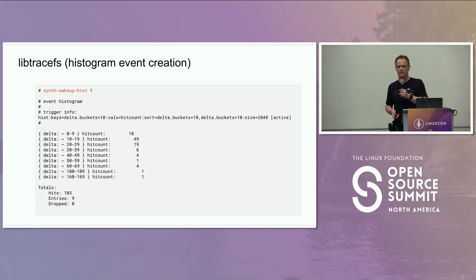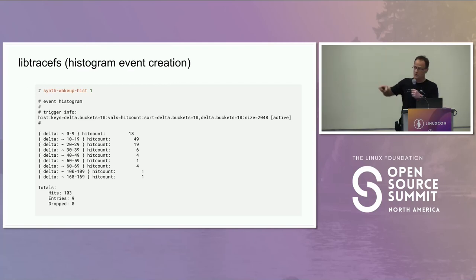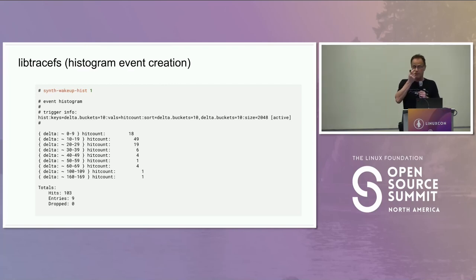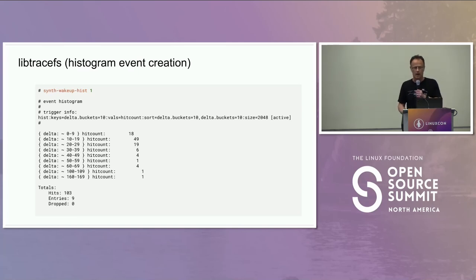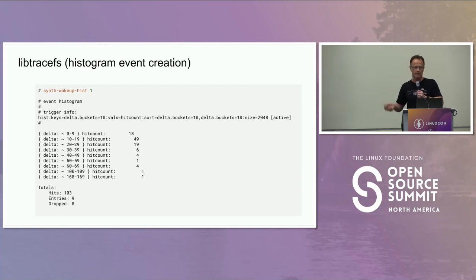Running the code produced a histogram sorted by delta — showing latencies in microseconds. For example, 160 microseconds had one hit. You can see the histogram output sorted by the delta field, giving a distribution of wake-up latencies.